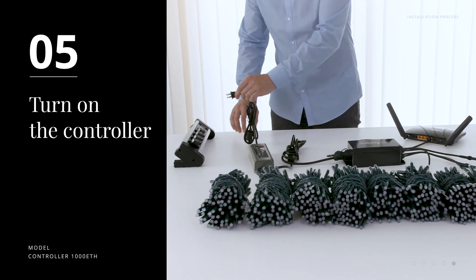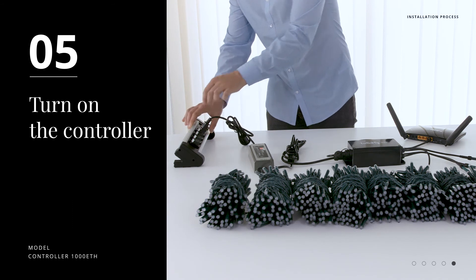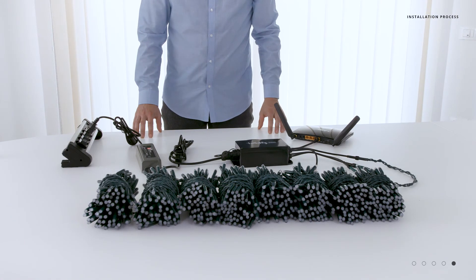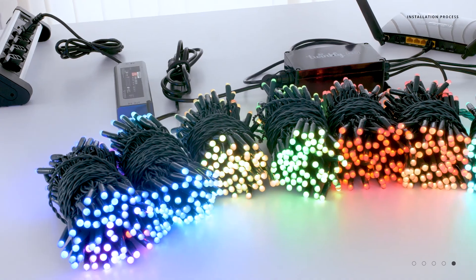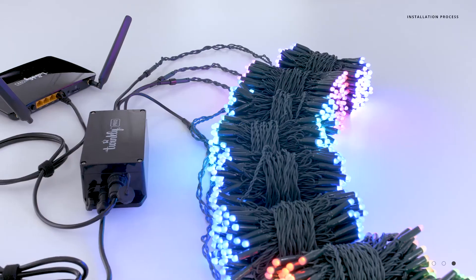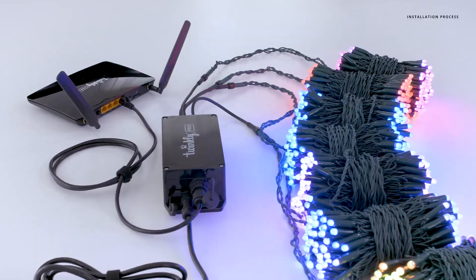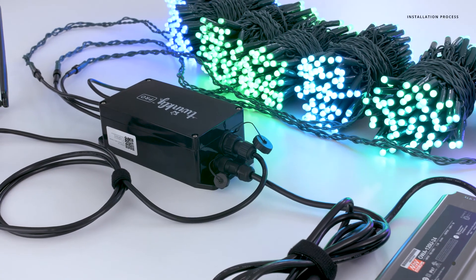Step five, turn on the controller. Now that we're all installed, we're ready to turn on the controller and power up the lights. We are now ready to set up your connection with the Twinkly app in order to take advantage of all of our advanced features of the Twinkly Pro controller and light strings.